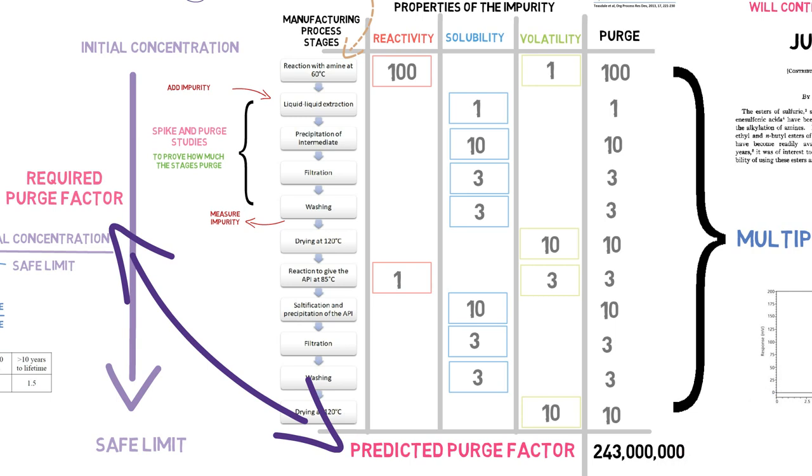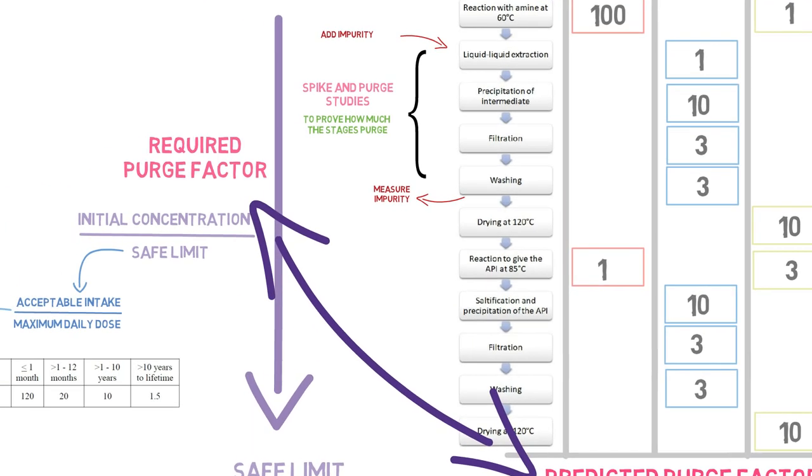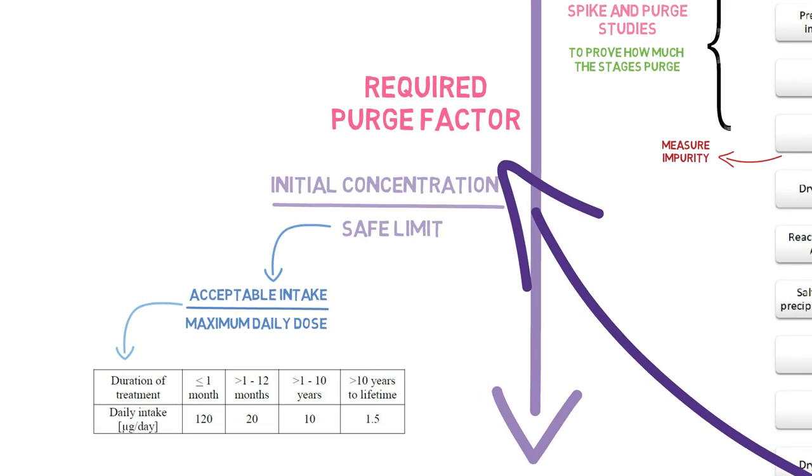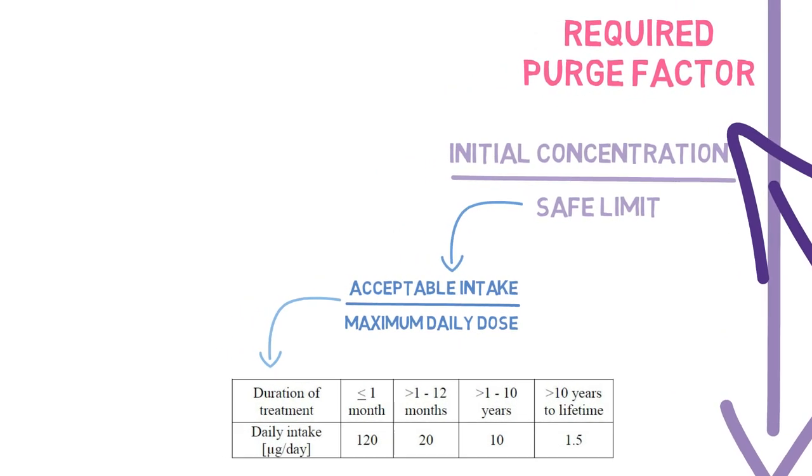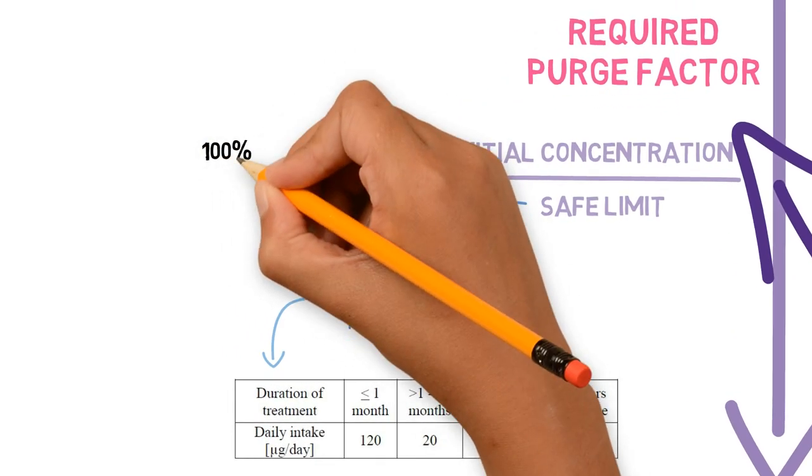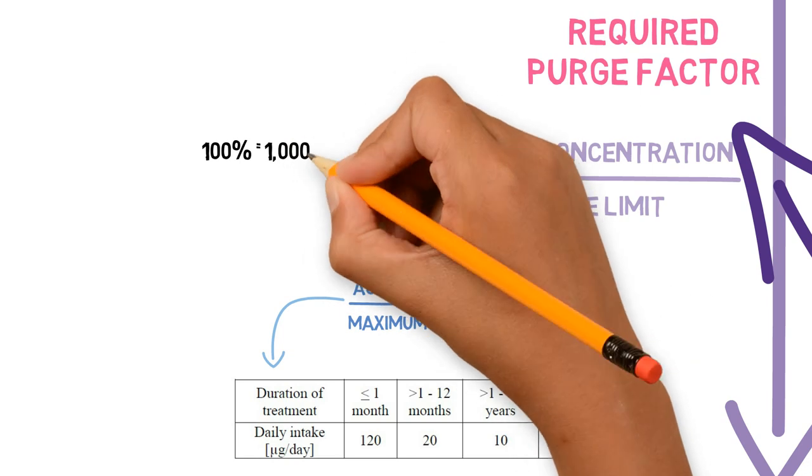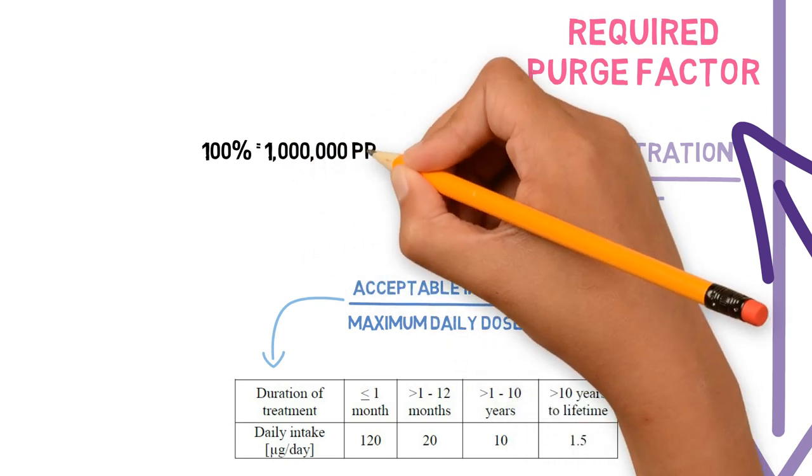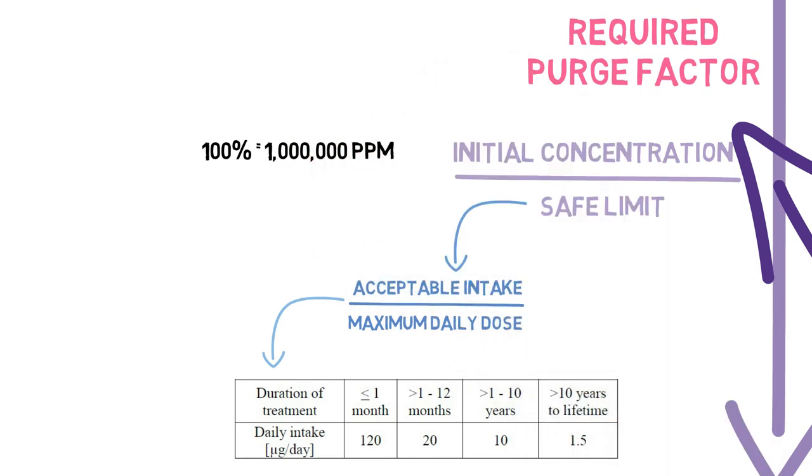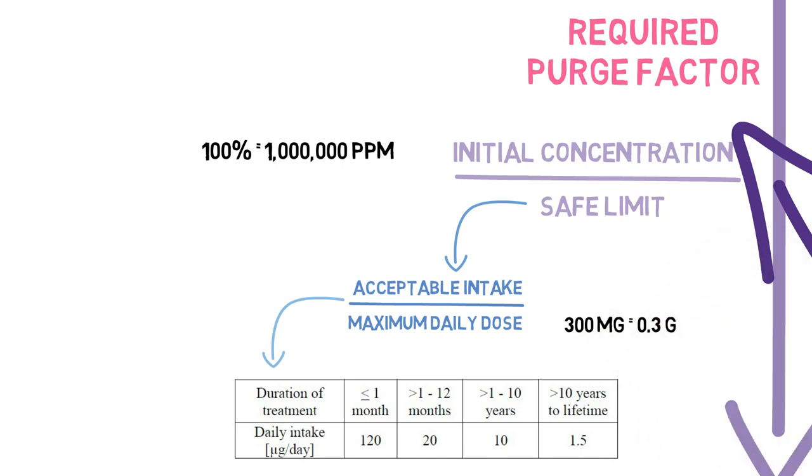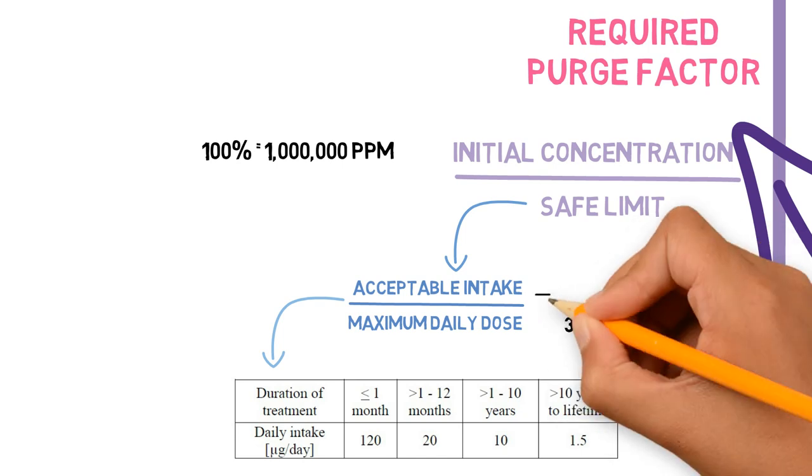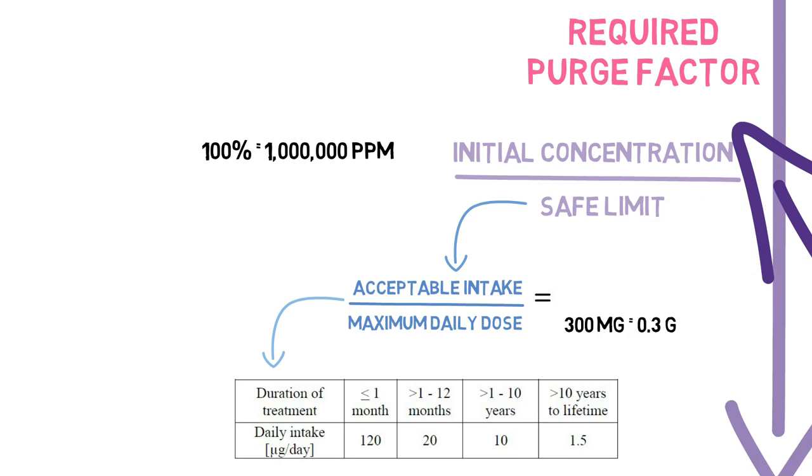To calculate the required purge factor, we need the initial concentration of the impurity and its acceptable limit in the API. Since the impurity is the starting material, we start with 100%, which is 1 million ppm. And the limit is calculated as follows. Let's say the maximum daily dose of the API is 300mg, and this drug is for chronic use, that is, used for more than 10 years.